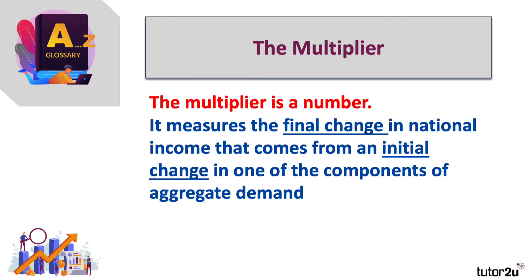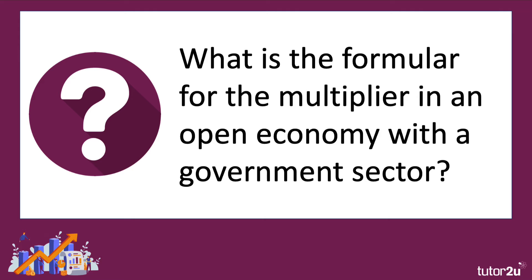You're kind of hoping the multiplier is quite a big number, but it often isn't. The extended multiplier brings into account not just saving, but also an open economy. So goods and services can be imported — that's a leakage from the circular flow. And also the government sector: government spending money on the one hand, but of course they're also taking direct taxes from individuals and companies. So we have to consider two more leakages — in addition to savings, we have imports and tax.